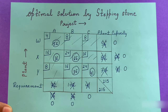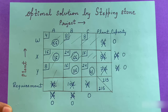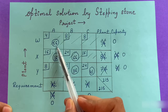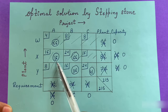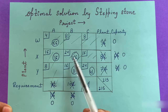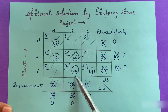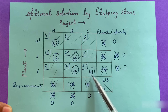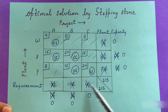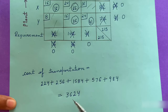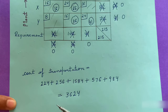Now we find the cost of transportation. The cost will be 4×56 + 16×16 + 24×66 + 16×36 + 24×41, giving a total of 3,622. Now we have to check whether the cost found by the northwest corner method is optimal or not.